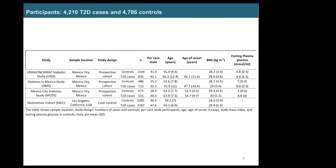We conducted this study using the exome chip genotyping array. The study design included cases and controls across several cohorts, totaling around 4,000 cases and 4,000 controls. In the QQ plots of all variants on the exome chip, we focused on variants common in Mexico but not in Europeans, reasoning that these are where novel associations would be found, since variants already common in Europeans would have been found by much larger studies.